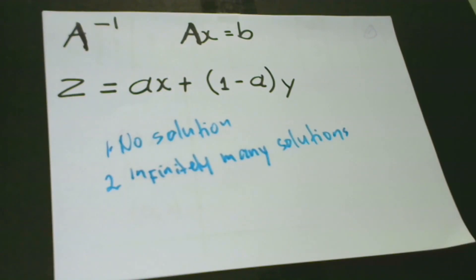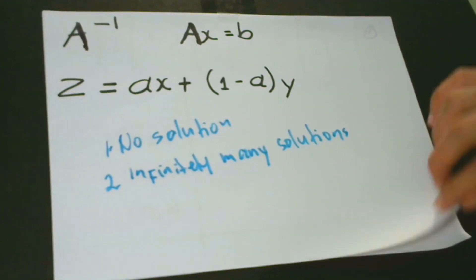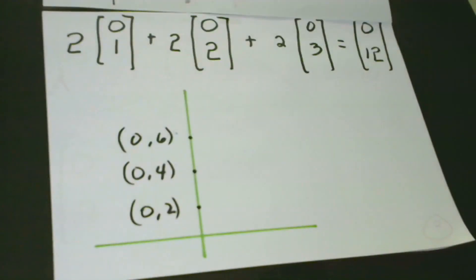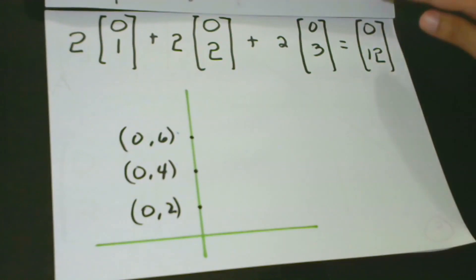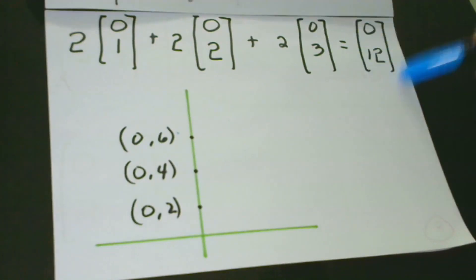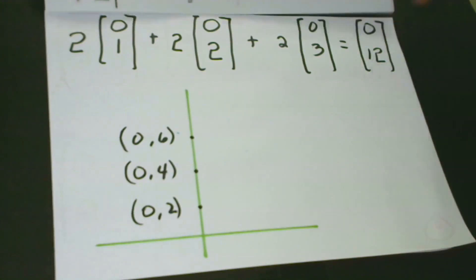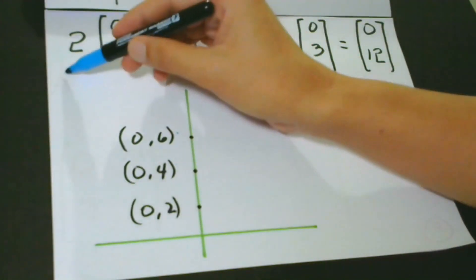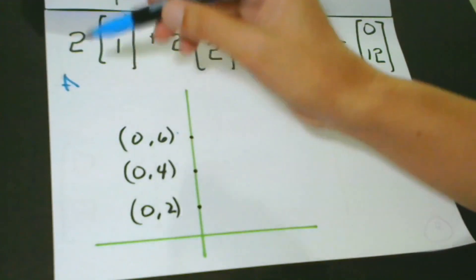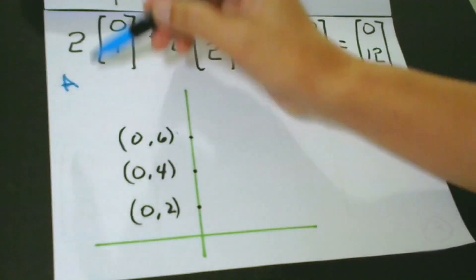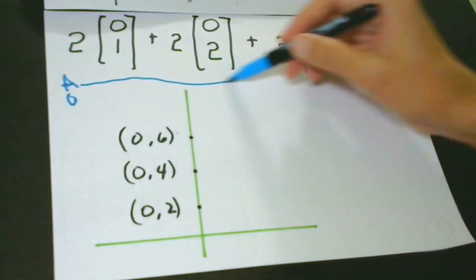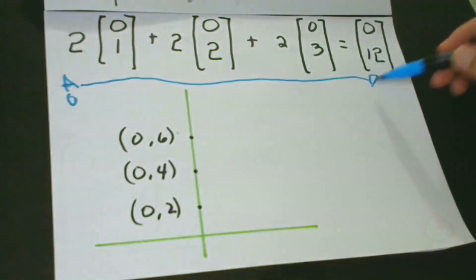To understand how many solutions a certain equation may have, think of a column of A as telling us a direction on how to reach b. So this column tells us how far we're going to go to reach b — from the origin, which is valued at zero, out to a certain value of b.